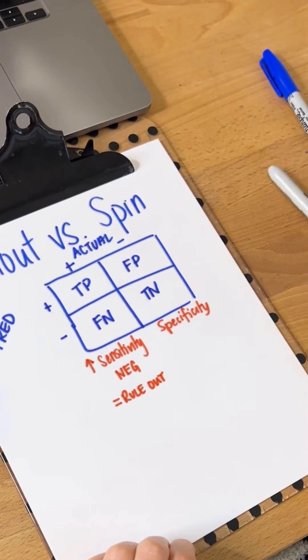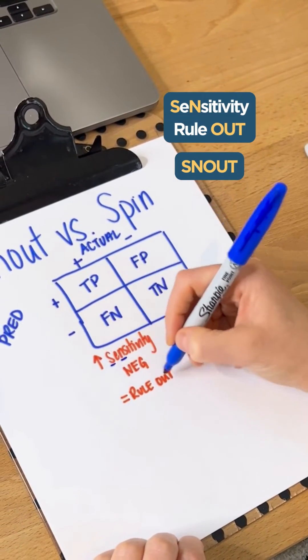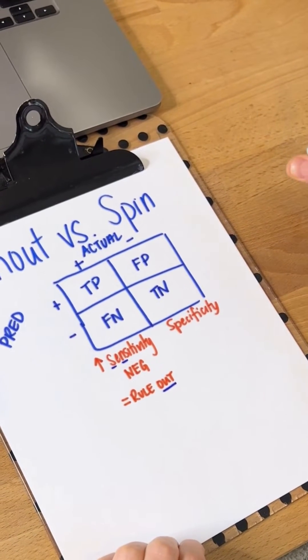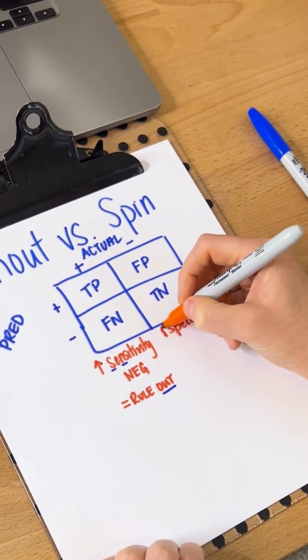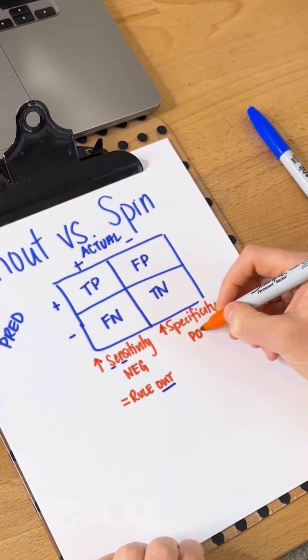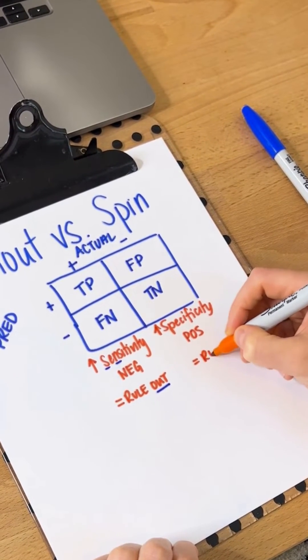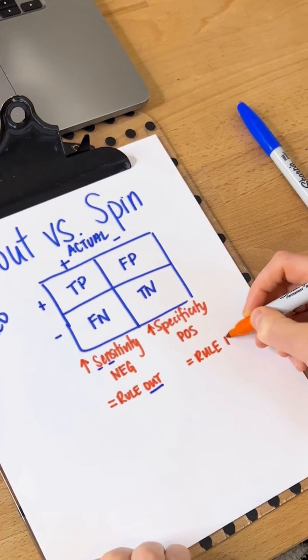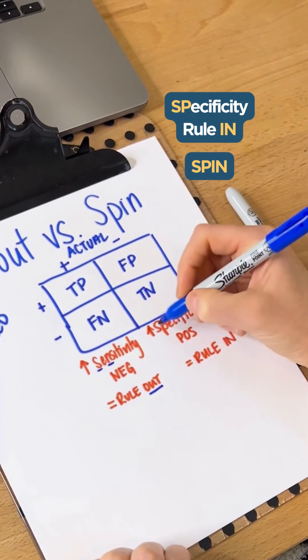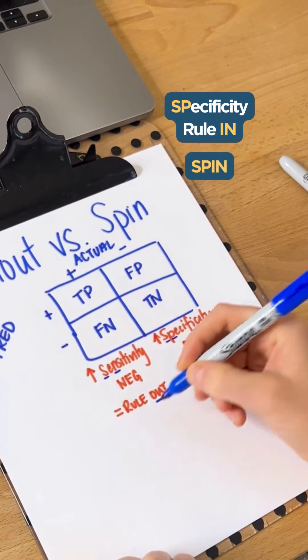And this is where that SNOUT comes through: sensitivity, rule out. If it has a high specificity and a positive result, this means it has a strong ability to rule in. So SP for specificity, rule in: SPIN. So that's your SPIN and SNOUT.